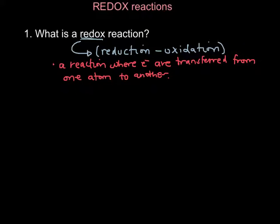What you need to understand is that in chemistry, electrons are kind of like money — they're currency. Those electrons being transferred from one element to another are often the driving force behind a chemical reaction. Why the reaction actually happens is because one atom wants those electrons more than the other.